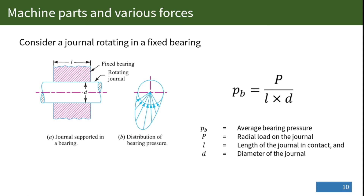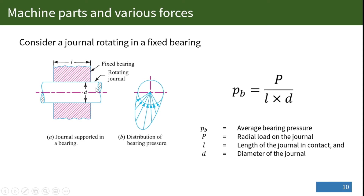In getting the bearing pressure for this arrangement, since the distribution of bearing pressure is not uniform throughout the curved surface area, the average bearing pressure is obtained using the equation: bearing pressure equals the load exerted by the bearing on the journal, divided by the length of the journal in contact with the bearing multiplied by the diameter. The area of interest is the length and the diameter, which in the unfolded perspective is equivalent to the area of a rectangle.